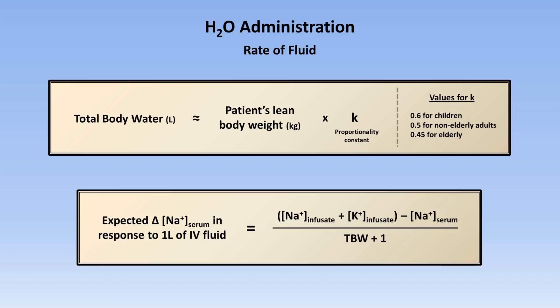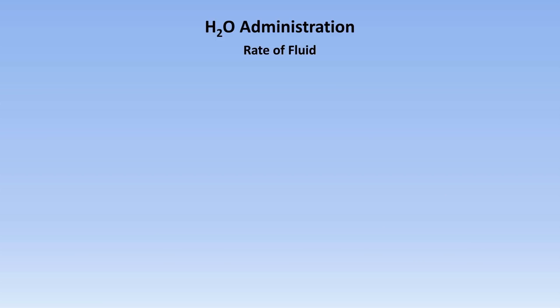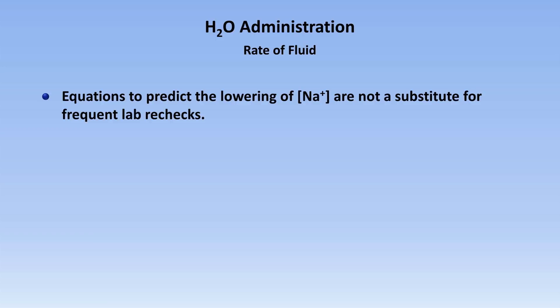Though for some patients such as those with DI, ongoing losses can be corrected for with time and effort, for others such as patients with profuse watery diarrhea it can be impossible to accurately correct for. As a consequence, the serum sodium should be rechecked and the choice and rate of IV fluids reassessed every 2–8 hours during treatment.